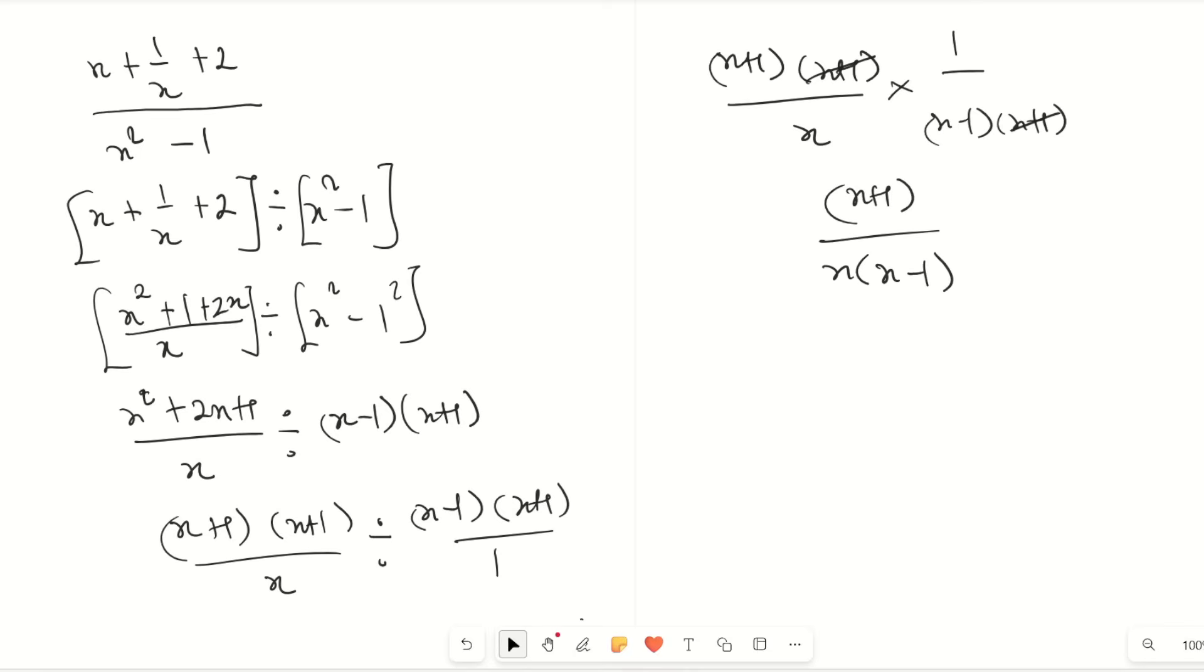The most important thing is to ensure that when we look at the difference of two squares, we express them correctly as (x-1)(x+1). Anytime you have a quadratic, you must simplify and write them in their factors. You can use the calculator or the factoring method. Once we simplify, we have (x+1)/[x(x-1)] as our final answer.